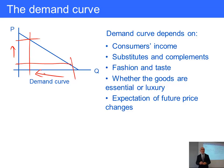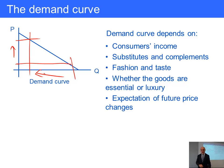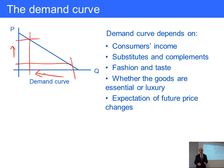Fashion and taste: you advertise a good, it becomes very fashionable, then for a given price more are going to be demanded. Maybe six months later the goods become unfashionable and for the given price demand has fallen away, so you can hardly sell them at any price. Whether the goods are essential or luxury — essential goods, basic foodstuffs for example, whether the price goes up or down, people tend to buy the same sort of quantity. This is what is called price insensitive, or price inelastic.